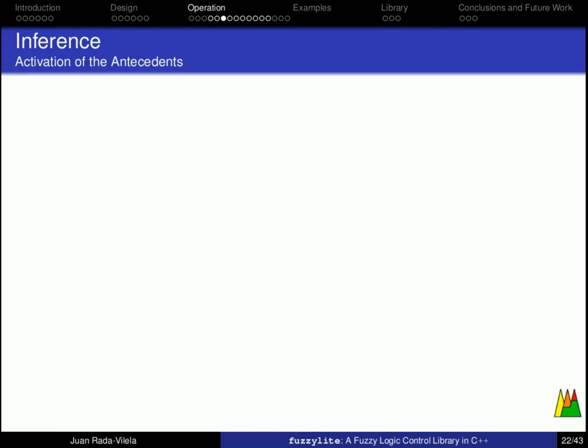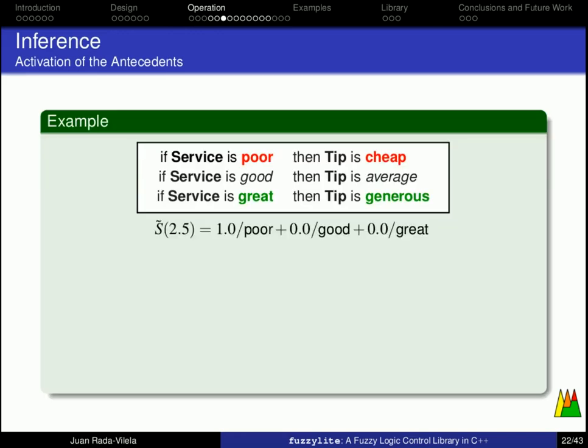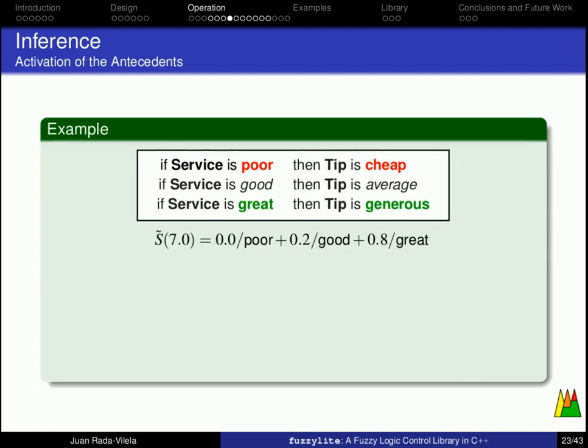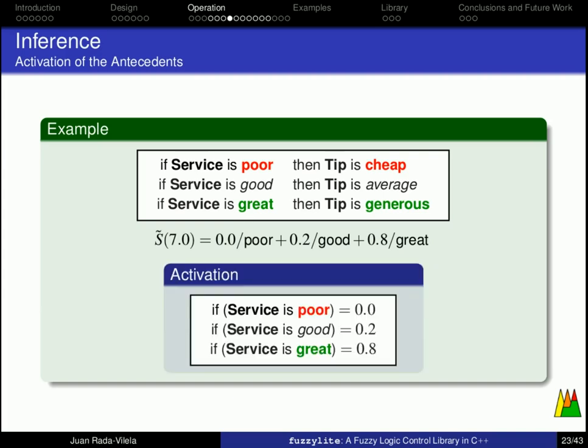The first step is the activation of the antecedents, and considering the example that we have worked so far, taking an input value of 2.5 for the service, we assign the values from the membership functions to each of their corresponding propositions, and ultimately, we will have an activation degree for each antecedent. Now, considering the more interesting case, of an input value of 7.0 for the quality of service, we assign 0.0 to the proposition service is poor, 0.2 to the proposition service is good, and 0.8 to the proposition service is great.